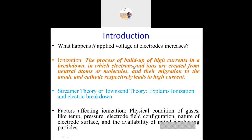Whatever the electrodes are, if the applied voltage increases — say above 33 kV rating — the ionization process begins. Ionization process is the buildup of high currents in a breakdown, in which electrons and ions are created from neutral atoms or molecules and migrate to the anode and cathode respectively, resulting in high current.